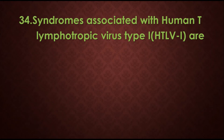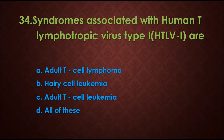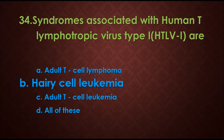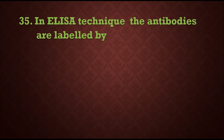Question 34: Syndromes associated with human T-lymphotropic virus type 1 (HTLV-1) are — options are: A) adult T-cell lymphoma, B) hairy cell leukemia, C) adult T-cell leukemia, D) all of these. The answer will be hairy cell leukemia.